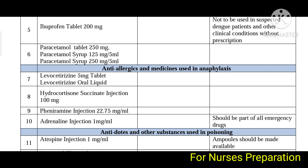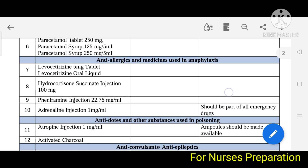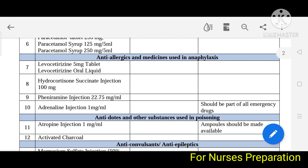Next category is anti-allergic and medicines used in anaphylaxis. It includes levocetirizine 5 mg tablet and levocetirizine oral liquid, hydrocortisone succinate injection 100 mg, pheniramine injection 22.75 mg, and adrenaline injection 1 mg/mL — also included for the treatment of anaphylaxis and anti-allergic conditions.